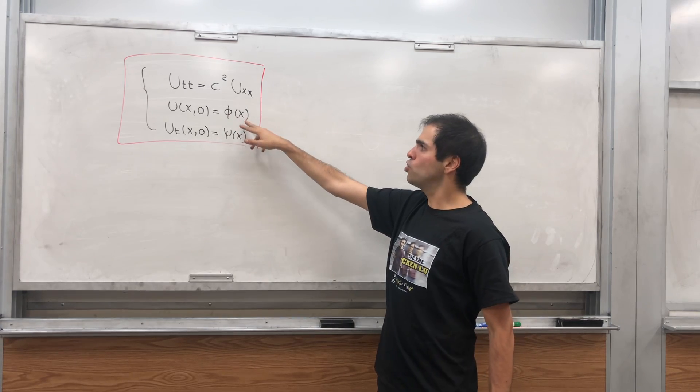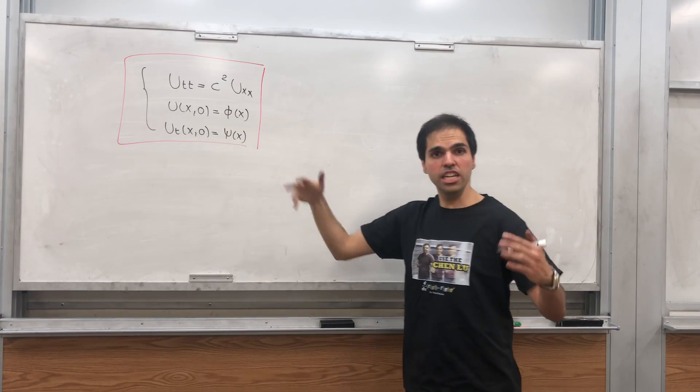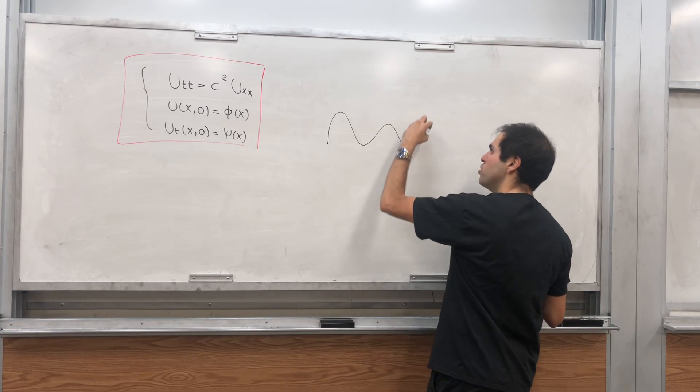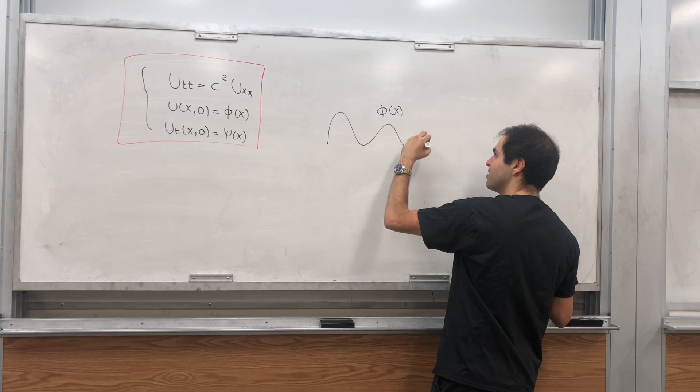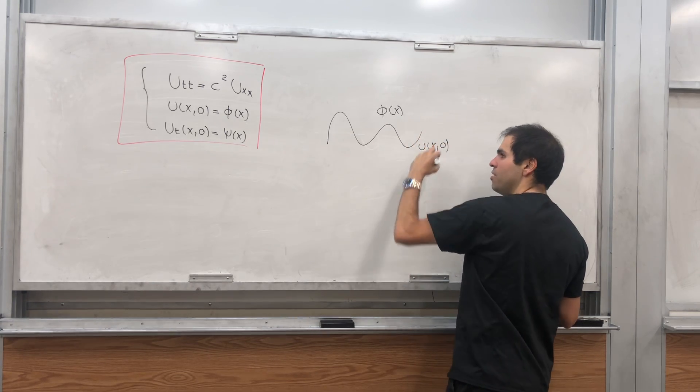Namely, assume you have a wave with initial position phi, so initially you assume the wave has some form phi of x.